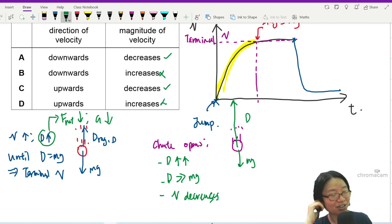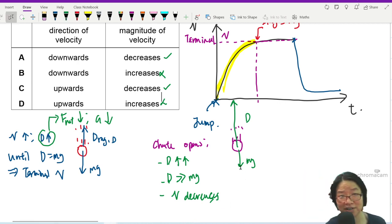But also at the same time, direction of velocity is always downwards. Just because you open the parachute doesn't mean that you will suddenly float. For you to float, I need the drag force to maintain, but it won't maintain here.